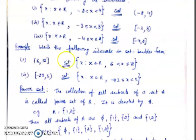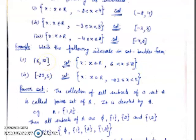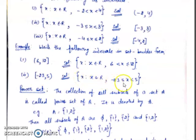Next example: write the following intervals in set builder form. The interval (6, 12] — open at 6 — is written as: X such that X ∈ R and 6 < X ≤ 12, because it is closed at 12. The interval [−23, 5) — closed at −23 — is written as: X such that X ∈ R and −23 ≤ X < 5, because it is open at 5.